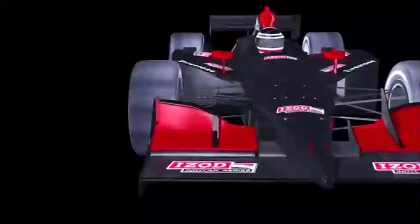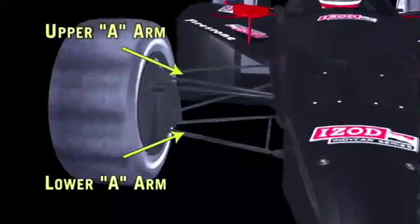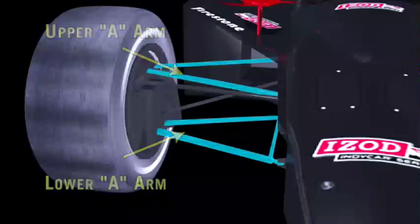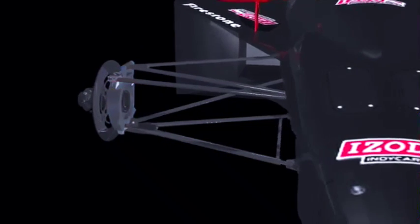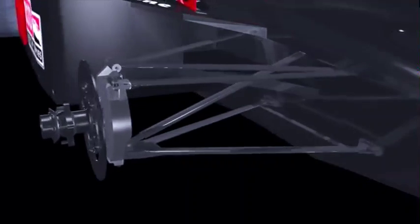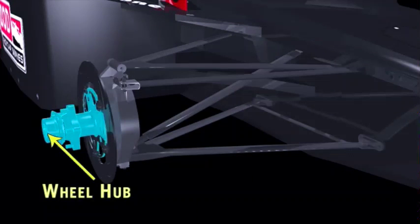For primary support, the suspension consists of the upper and lower A-arms, which connect the body to the wheel upright. These are created from airfoil shaped steel tubing and connect the wheel hub and tire to the car body.